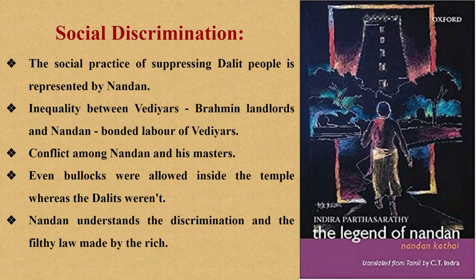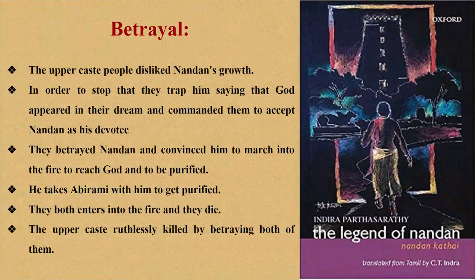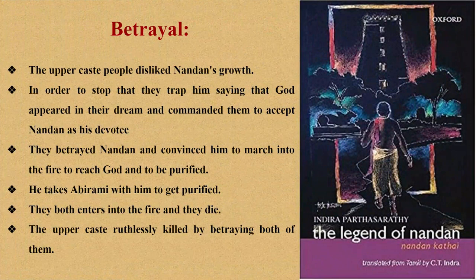Betrayal is the last theme of this play. In the climax scene, the Vediyar priest, the Vediyar landholder and two non-Brahmin upper caste collaborators conspired to do away with Nandana, exploiting his piety and spirituality which they saw as threats to their existence. They disliked Nandana's growth. To stop it, they trapped him saying that God appeared in their dream and commanded them to accept Nandana as his devotee. They betrayed Nandana and convinced him to march into the fire to reach God and be purified. Nandana took Abhirami too to get purified and they both died. The upper caste ruthlessly killed both of them by betrayal. They were exploited in the name of God. No matter how many centuries have passed, discrimination exists, leaving suppression in the hands of the oppression.